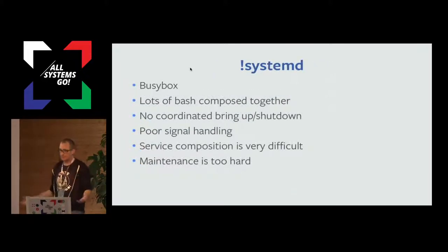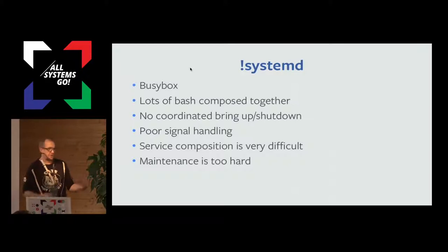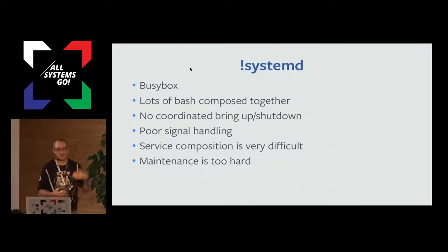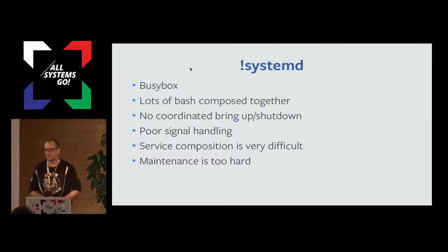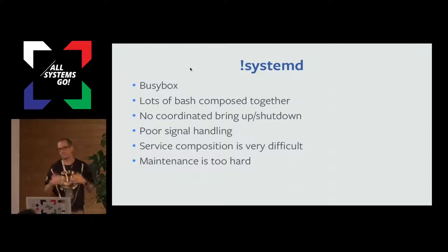For a long time we haven't been using systemd — we've been using BusyBox as our init system inside containers. The way we put services together is a lot of bash gets munged together in a startup process. There's no real coordinated bring-up or shutdown — we hope that people write good bash and start things in the right order, but we have no way to enforce that. There's a lot of poor signal handling. The way we've been shutting down containers is to blast a signal out to the entire process group and hope they shut down in the right order — and a lot of times they don't. We introduced a 'kill command' concept that allows arbitrary bash snippets to kill the right thing hopefully.